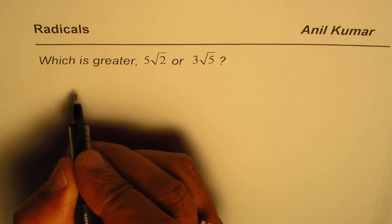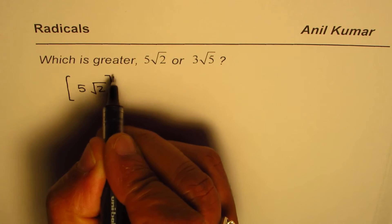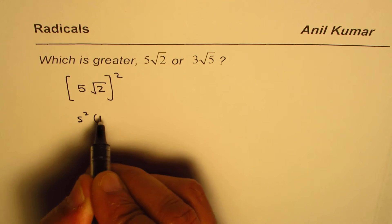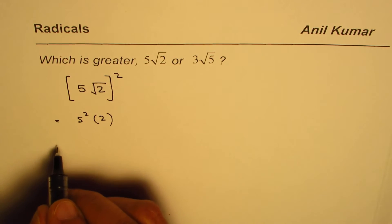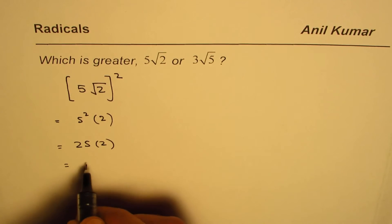So let us calculate 5 square root 2. Now if I square this, what do I get? We get 5 square times 2, and that equals 25 times 2, or 50.